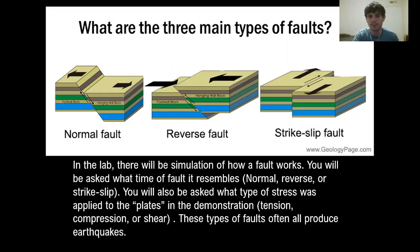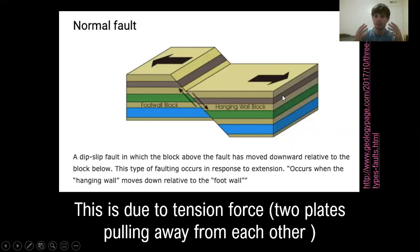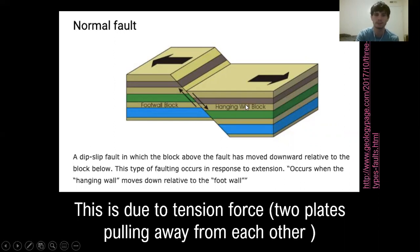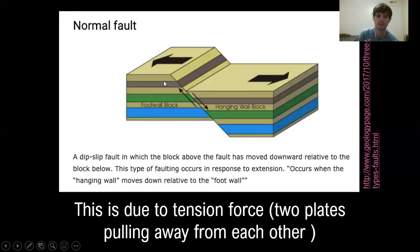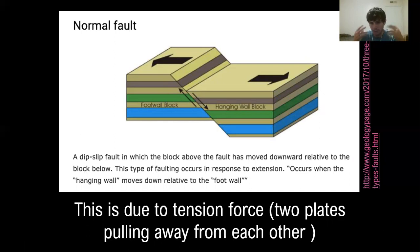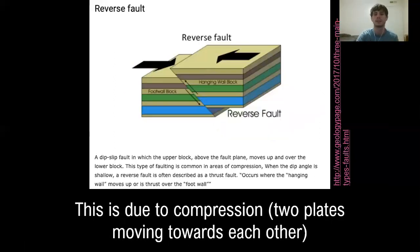A normal fault is when the plates move away from each other — the rock units diverge away from each other. This is caused by extensional stress. In a normal fault, the foot wall moves up. One way to memorize the types of faults is by their stresses: if a normal fault has extensional stress, then the reverse fault — the opposite — has compressional stress.